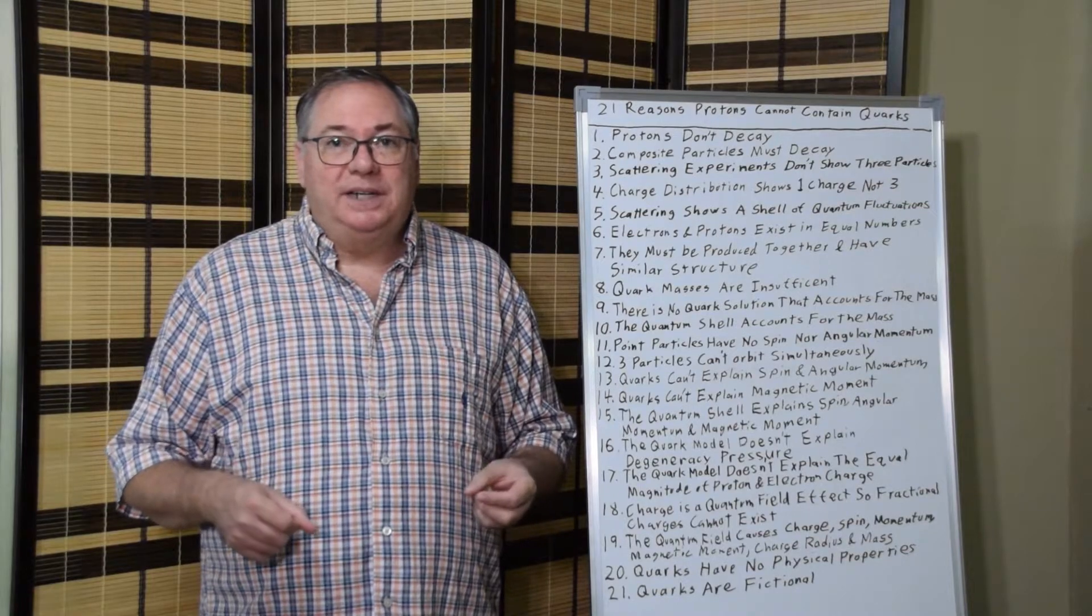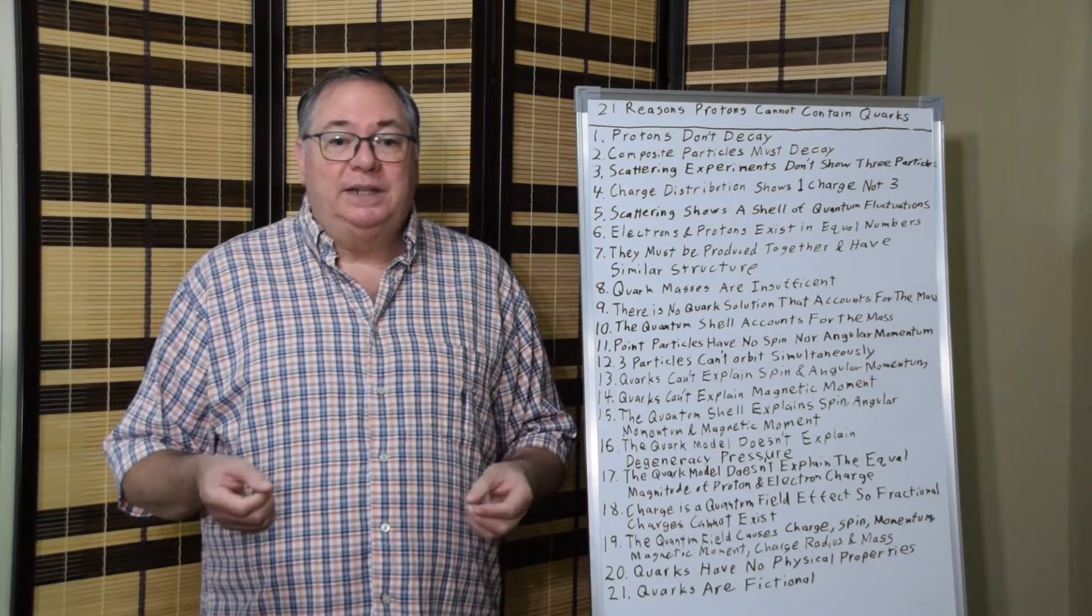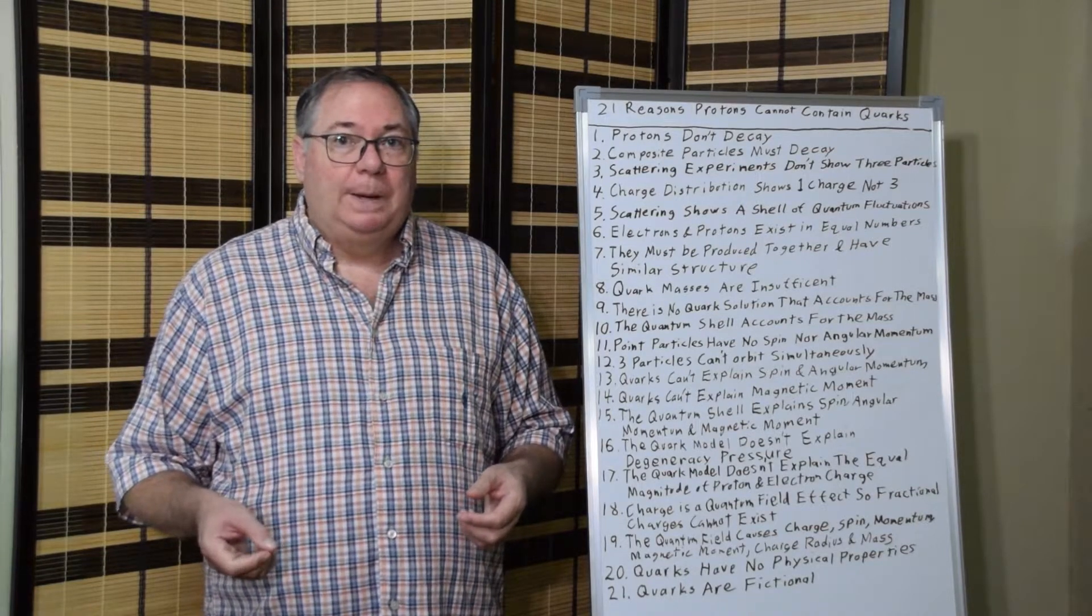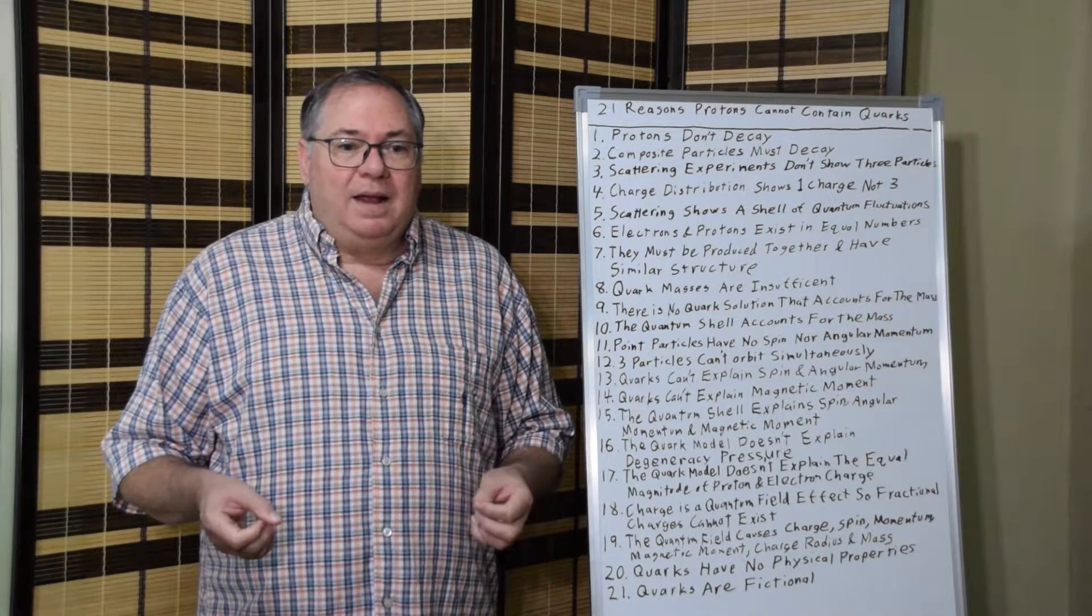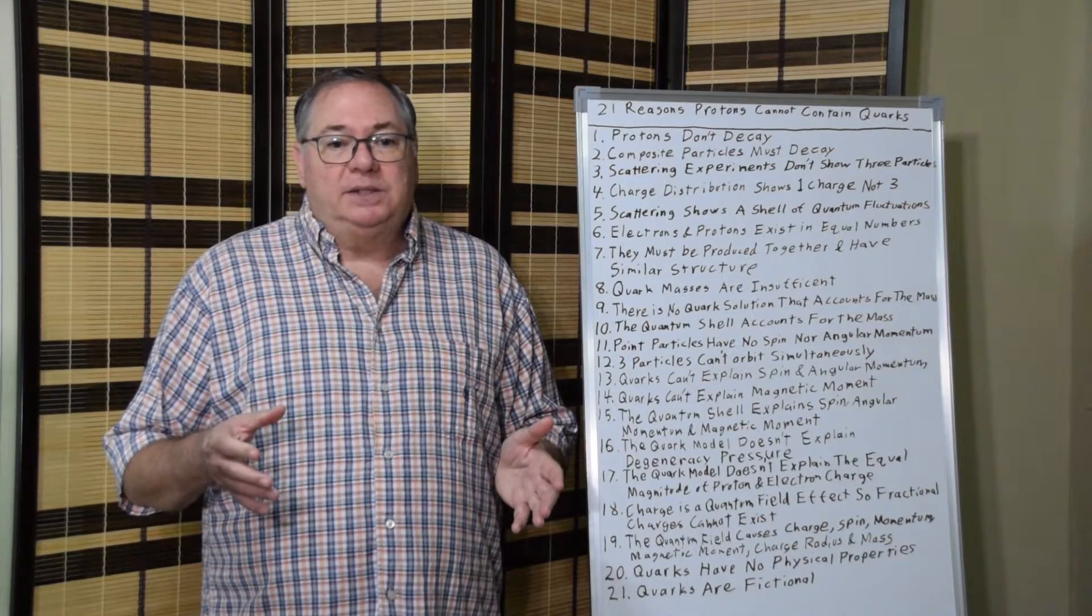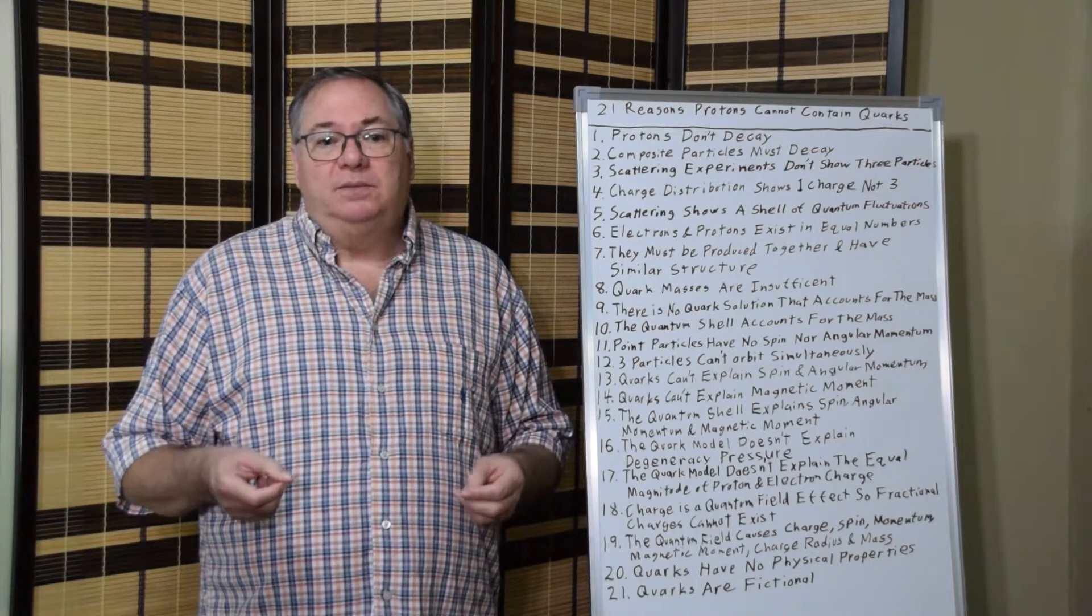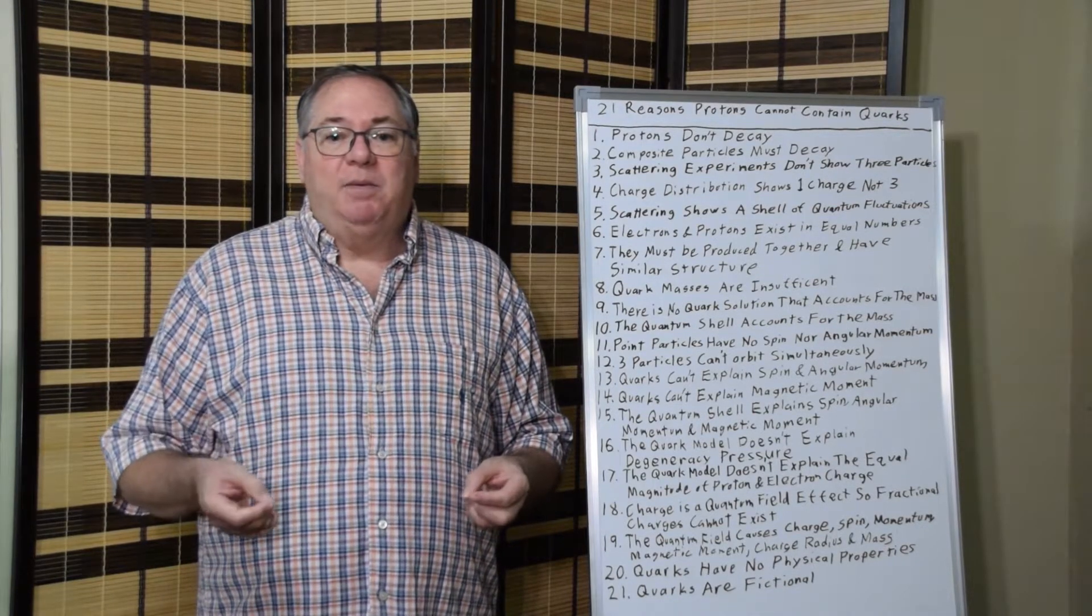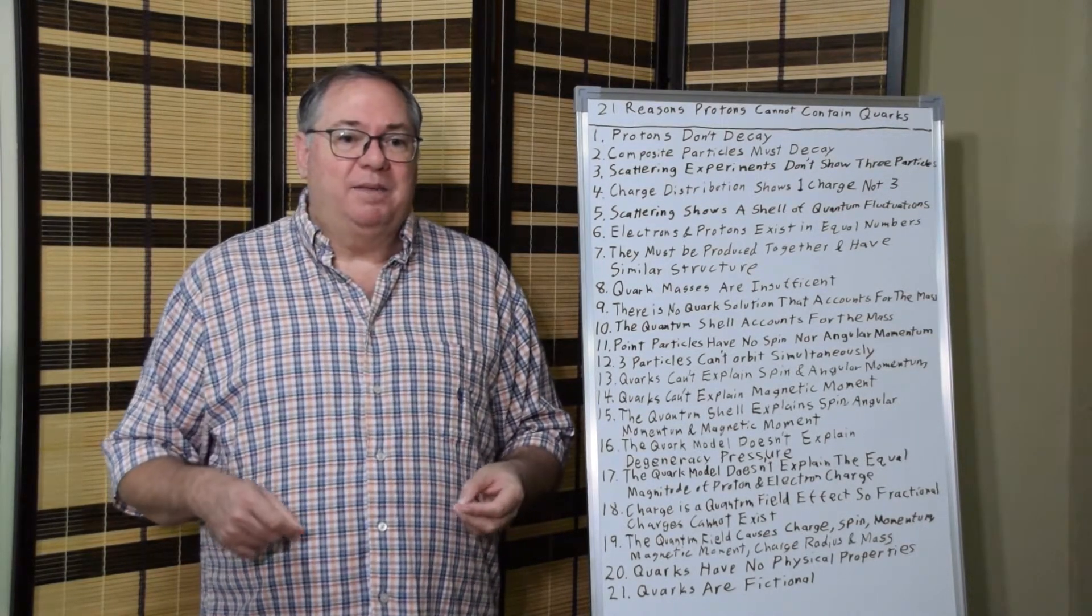So quarks can't explain spin and angular momentum. That's number thirteen. And number fourteen, quarks can't explain magnetic moment. And this is where we can go back to the quantum shell. So fifteen, the quantum shell explains spin, angular momentum, and magnetic moment.